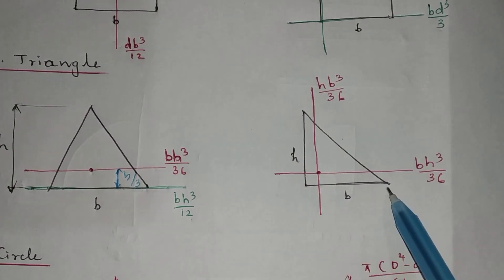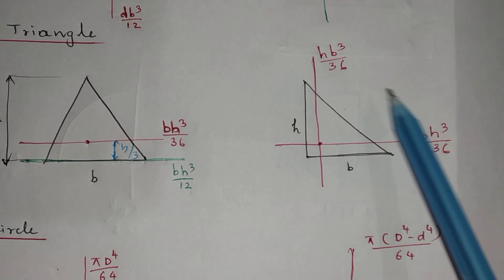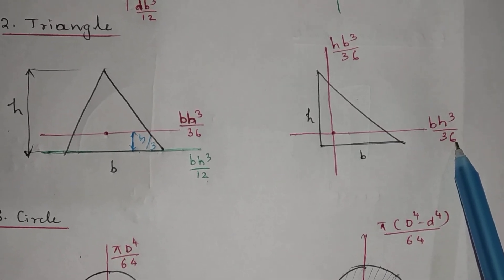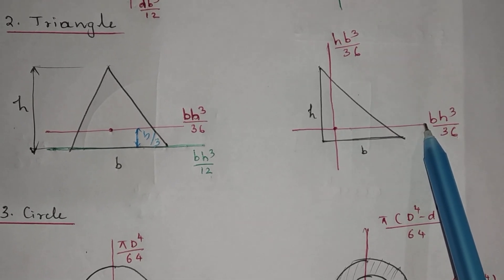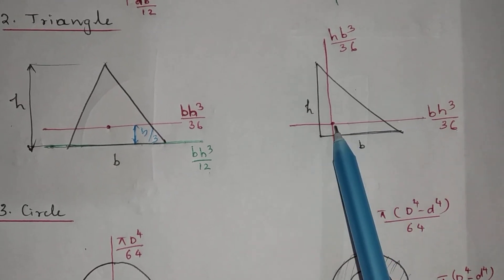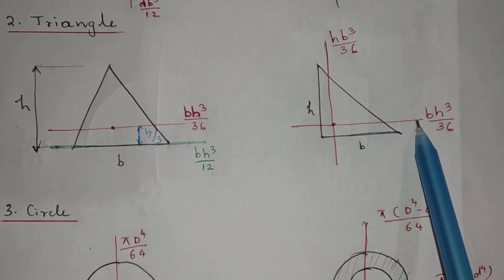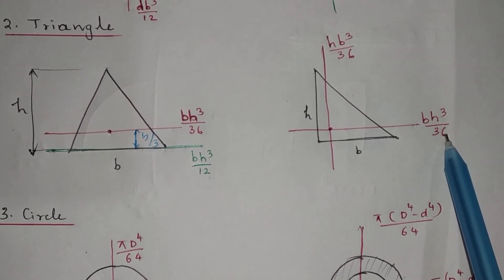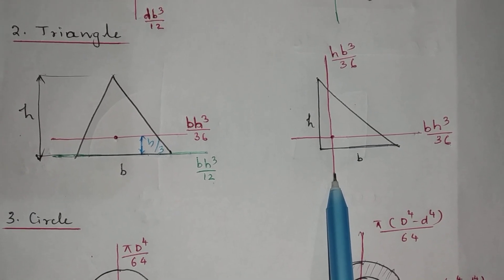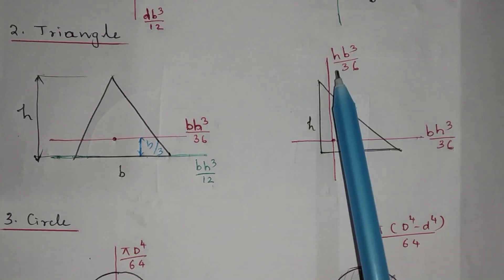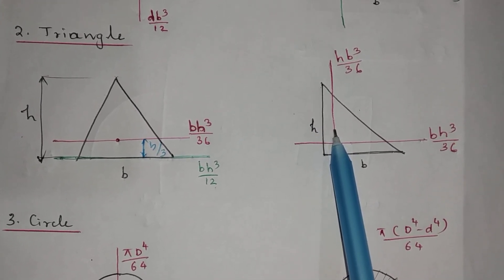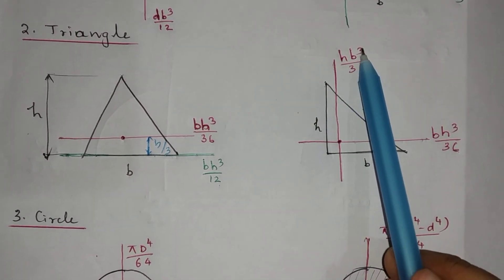For a right angle triangle, we have the centroidal X axis and centroidal Y axis. For the centroidal X axis, the moment of inertia value is BH cube by 36, provided two conditions are satisfied: first, the axis must be parallel to one side, and second, the axis must pass through the centroid. Similarly for the centroidal Y axis, both conditions are satisfied, so the formula BH cube by 36 applies. The first term should always be the side parallel to the axis considered.